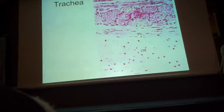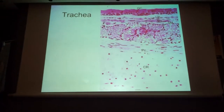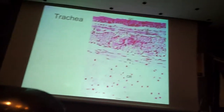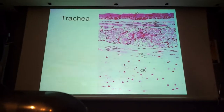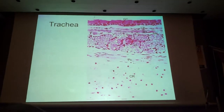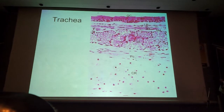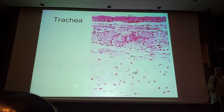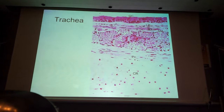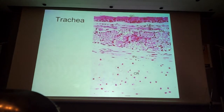Goblet cells are individual cells that secrete mucigen. The other part of the mucosa is sub-epithelium underlying the epithelium, which is the lamina propria. Then remember, there is a layer of fibers of the elastic type at the outermost part of the mucosa facing the sub-mucosa, but you need a special stain like orcein to see it.